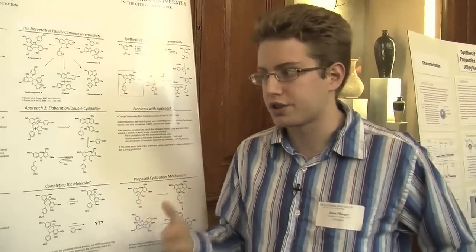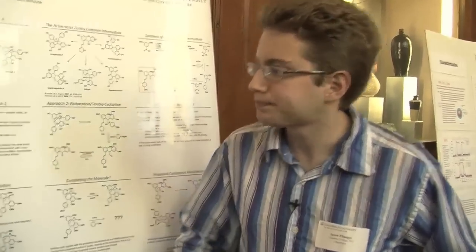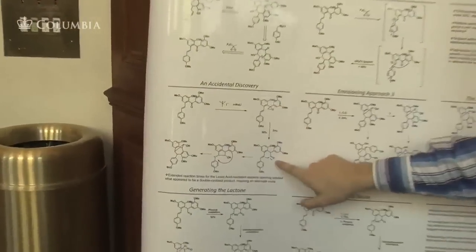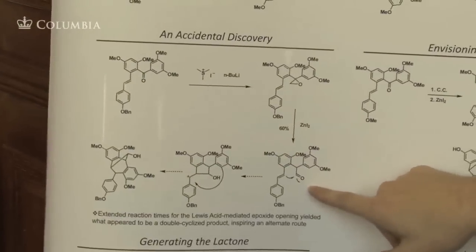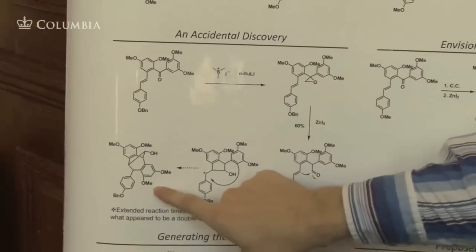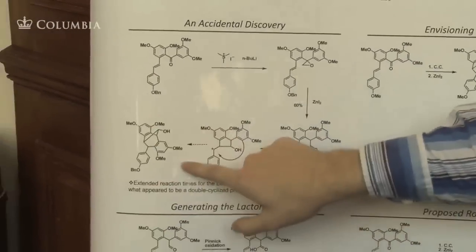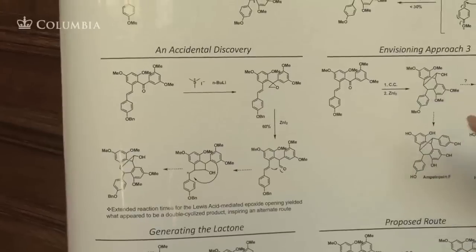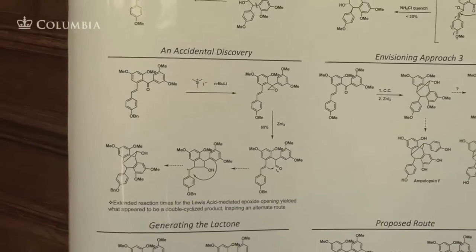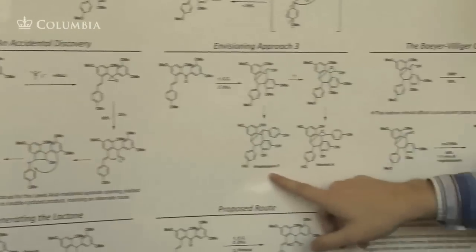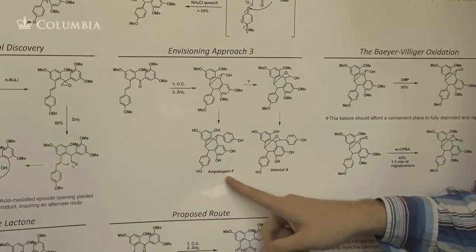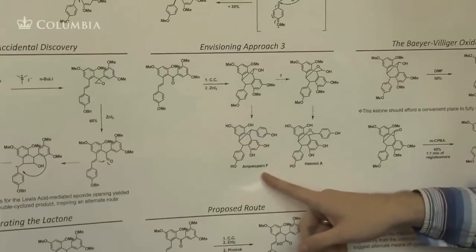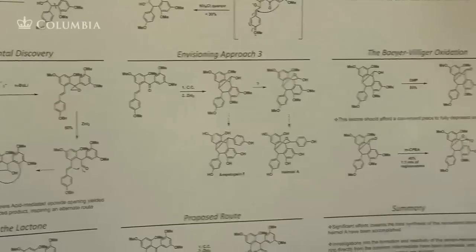An accidental discovery gave us inspiration for what became our third major approach, which we worked on this past summer. While going through the Corey-Chaykovsky zinc iodide, we got a fairly major side product, which we initially characterized to be this seven-membered compound. At the time we made it, we just thought that we could take that to Ampelopsin F, which is a natural product that had already been synthesized by the group, so it wasn't a priority for us, more just a mental exercise.